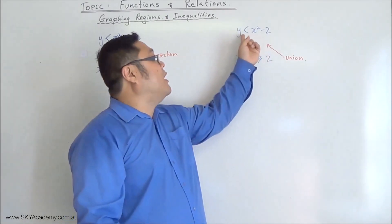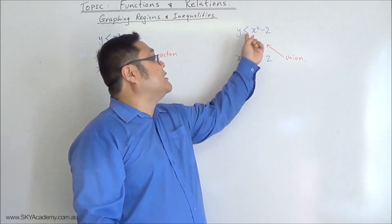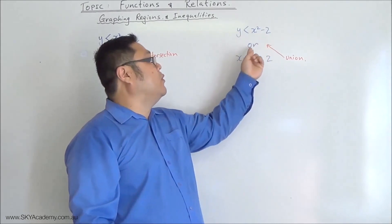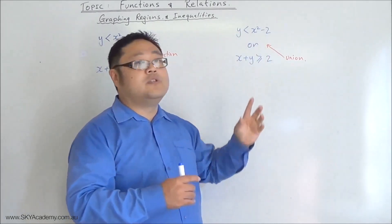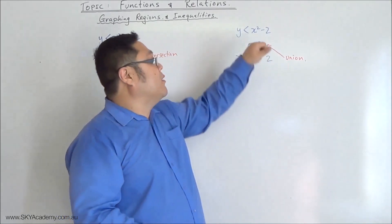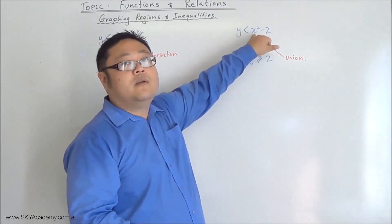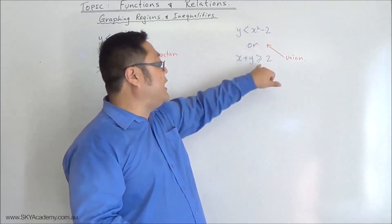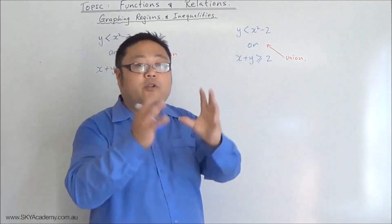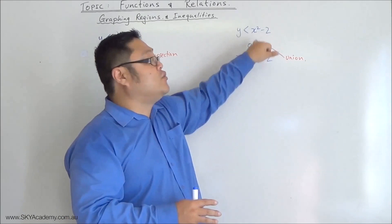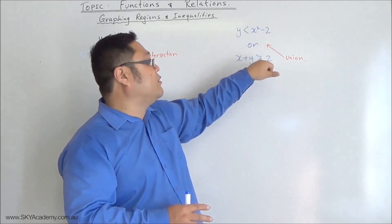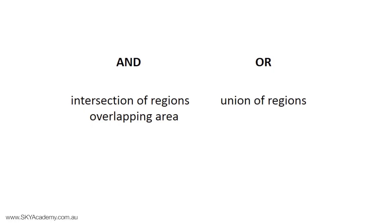Whereas if you're looking at the word 'or' — for example, y is less than x squared minus 2, or x plus y is greater than or equal to 2 — you're looking at where this is true as well as where this is true, which includes the common region but also includes where one is true but the other isn't, and vice versa.